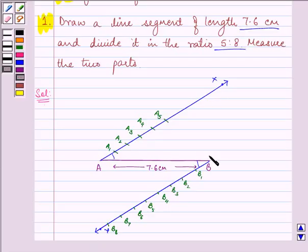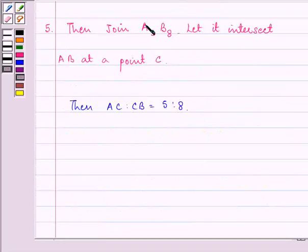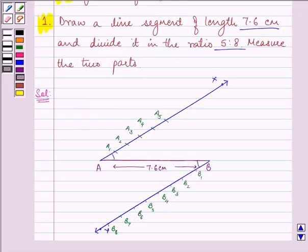Now we divide this line segment in the ratio 5:8 by joining A₅ to B₈. Let it intersect AB at point C. Then AC:CB will be in ratio 5:8.